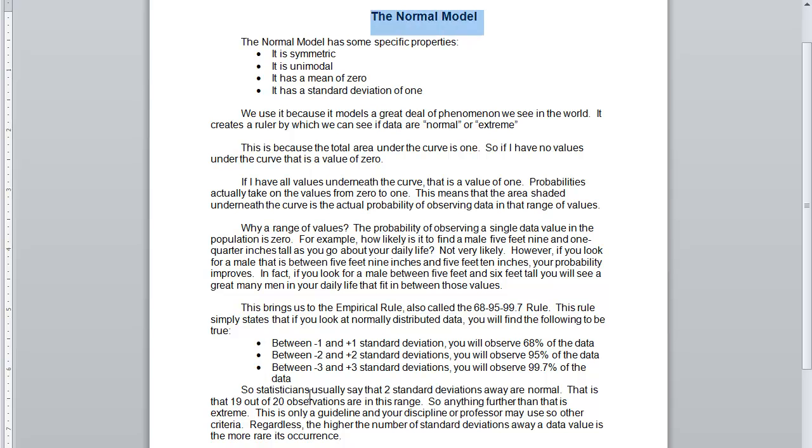Today we're going to talk about the normal model. The normal model has some very specific properties. It is symmetric. The mean, median, and mode are all the same value. This makes it unimodal, so it has basically just one hump, and it has a mean of zero and a standard deviation of one. This could be considered the standard normal model when the mean is zero and the standard deviation is one, and this allows it to have some very nice properties.